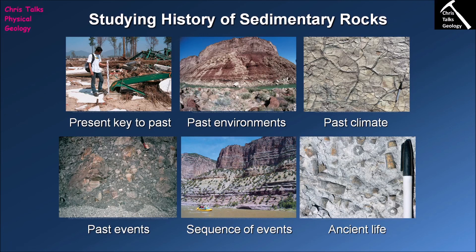The final thing that sedimentary rocks contain is of course fossils, and this gives us a window into ancient life. The animals we know from Earth history — for instance, dinosaurs — the only reason we know they existed is because we have their fossils as part of the rock record. If fossils weren't present we would have no idea that Tyrannosaurus rex once stalked the Earth. Because we do have fossils, we can use those rocks to date them and work out where they fall in Earth history. Thank you for watching everybody, and have a good day.